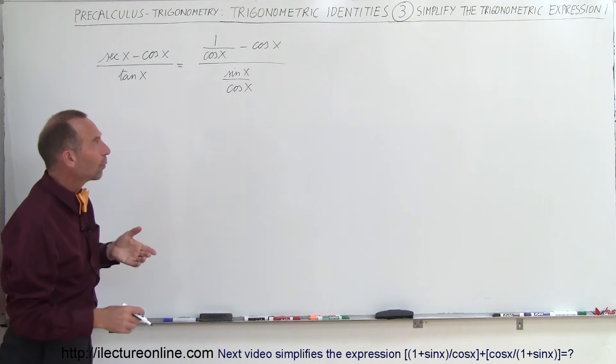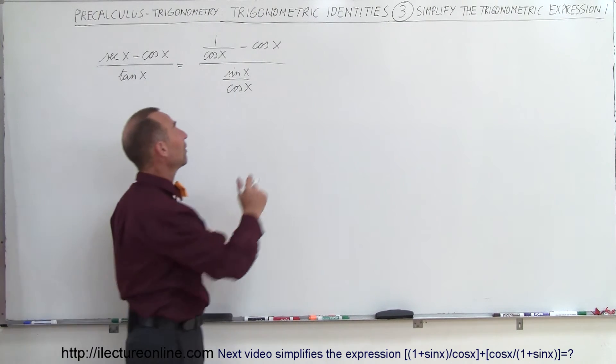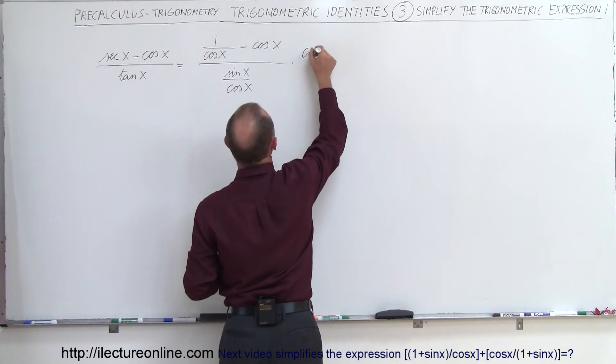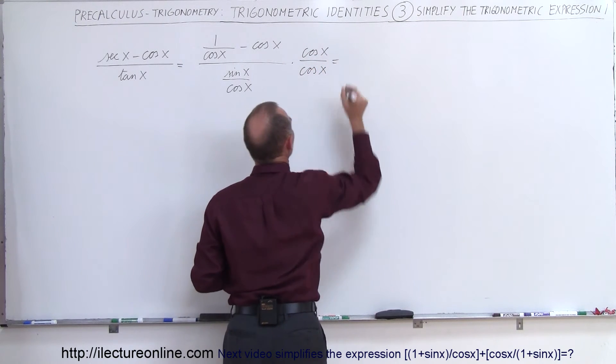So one way to simplify that would be to multiply both the numerator and the denominator by the cosine of x. So we'll do that. Times the cosine of x divided by the cosine of x. That's an algebraic trick.